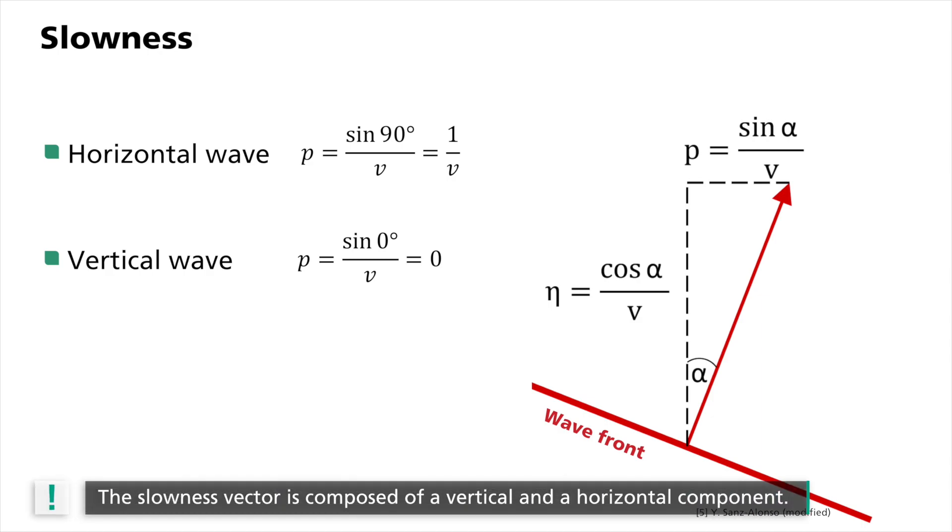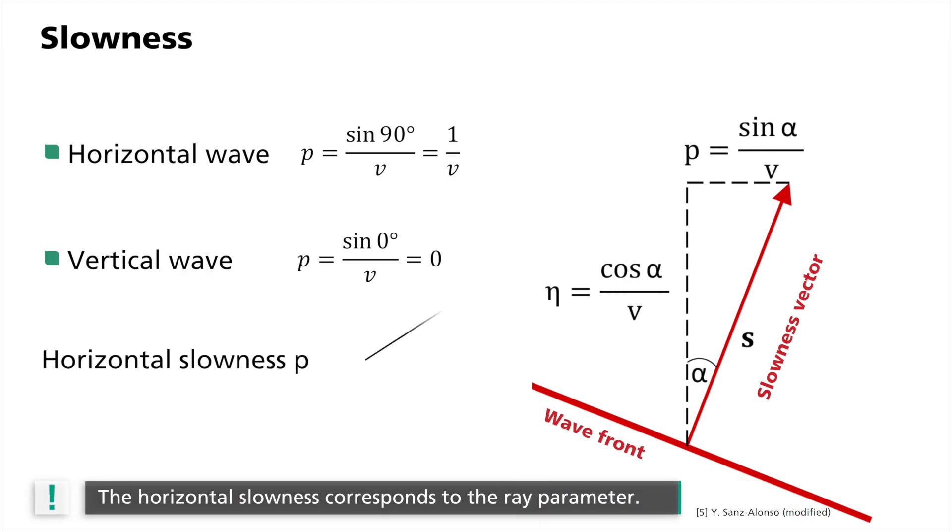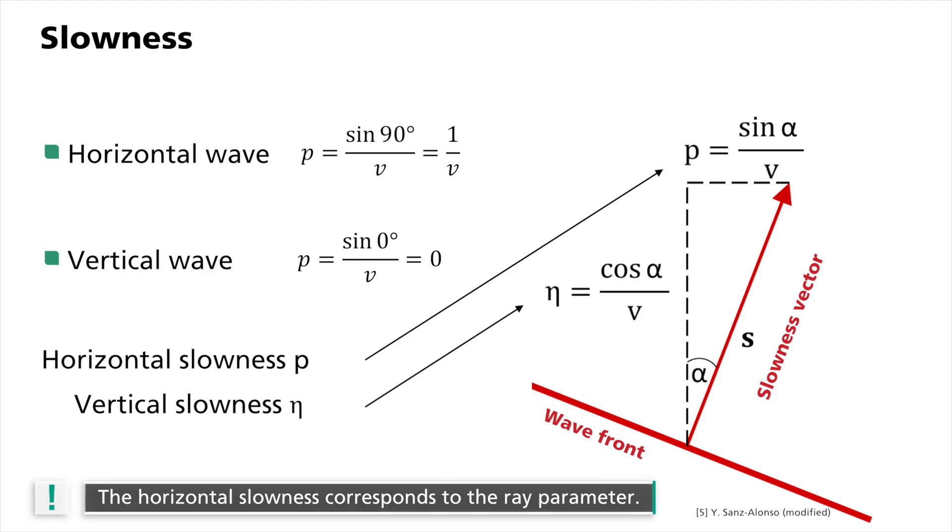Together, p and eta form what we call the slowness vector s. We see that it is equal to the reciprocal of the propagation velocity. p is therefore the horizontal slowness and eta the vertical slowness. However, the name slowness is not quite consistent from a physics standpoint, because both slow and fast describe velocities and not their reciprocals. Despite this, the name has established itself because slow media exhibit a high slowness and fast media a low slowness.